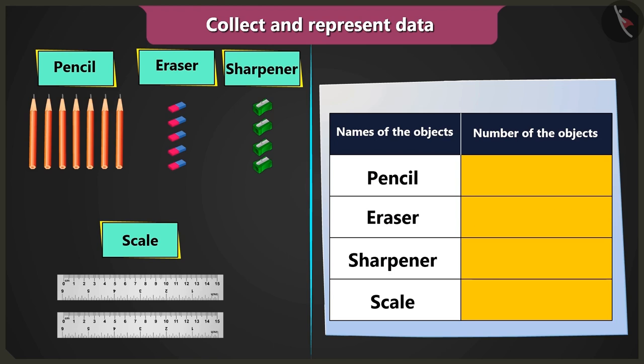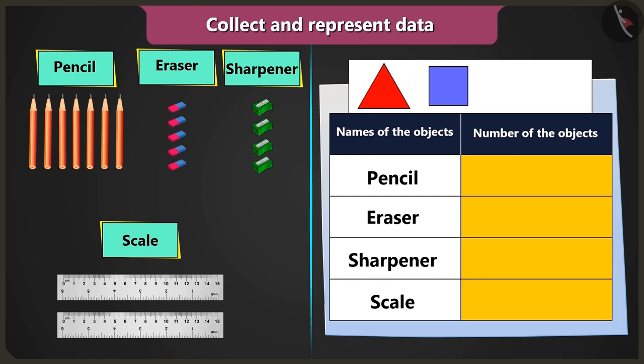And now, in the column count of objects, you have to draw as many triangles, squares, or circles as the number of objects.